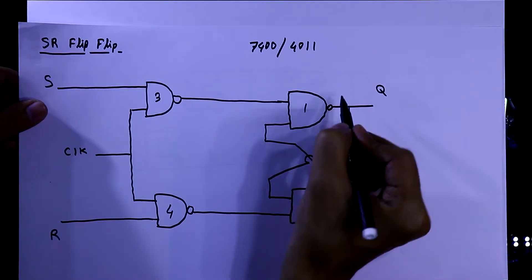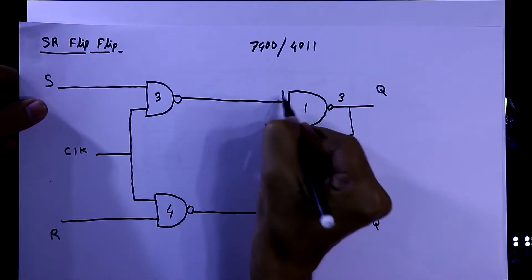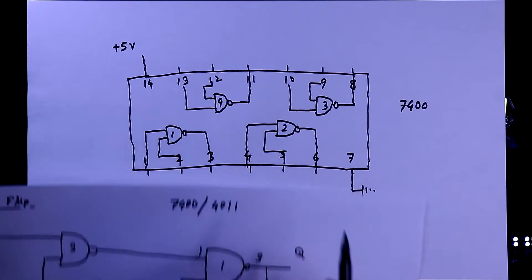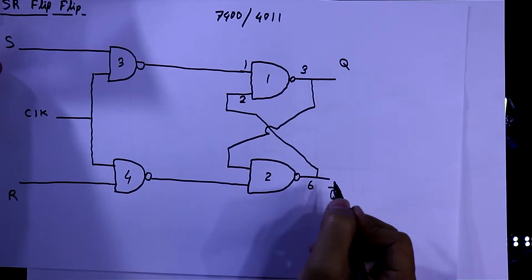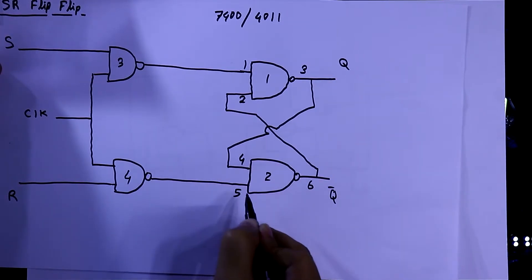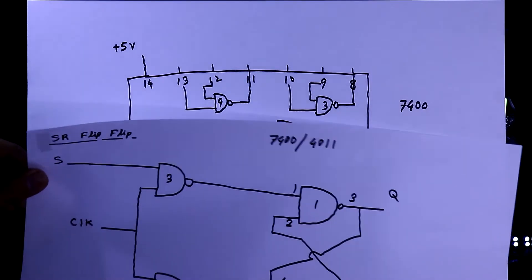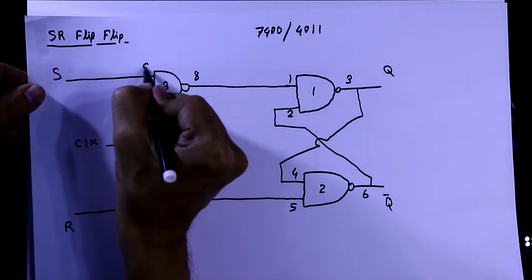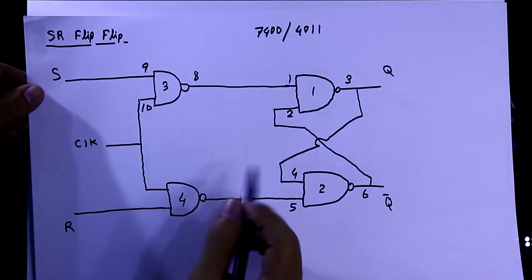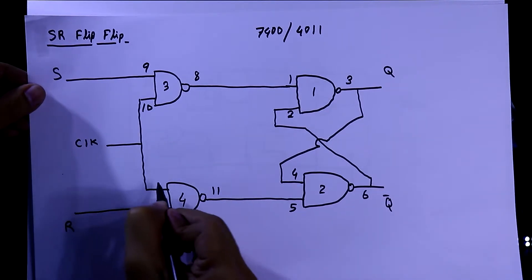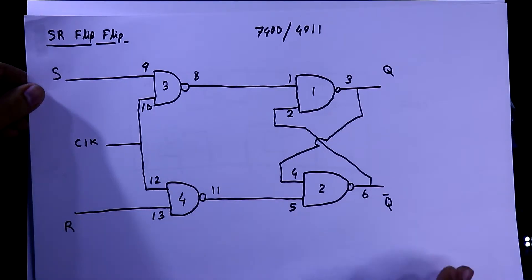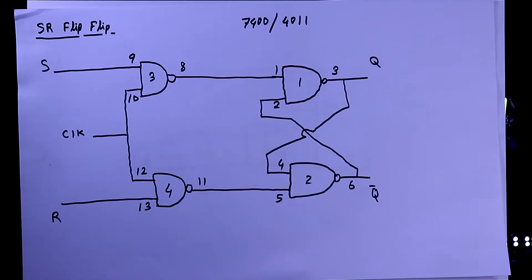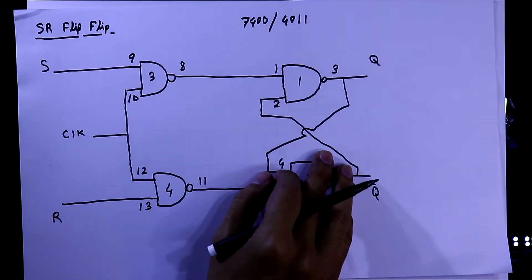For gate one, the output is pin number 3 and inputs are pins 1 and 2. Gate two uses pins 4 and 5 as inputs and pin 6 as output. Pin 8 is the output of gate three with inputs 9 and 10. Pin 11 is the output of gate four with inputs 12 and 13. This is how you connect the SR flip-flop for practical.